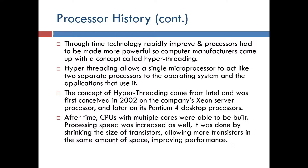Through time, technology rapidly improved and processors had to be made more powerful, so computer manufacturers came up with a concept called hyper-threading. Hyper-threading allows a single processor to act like two separate processors to the operating system and the applications that use it. The concept came from Intel and was first conceived in 2002 on the Xeon server processor and later on its Pentium 4 desktop processors. After time, CPUs with multiple cores were able to be built and processing speed was increased as well.